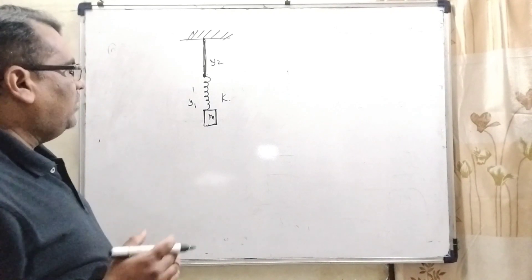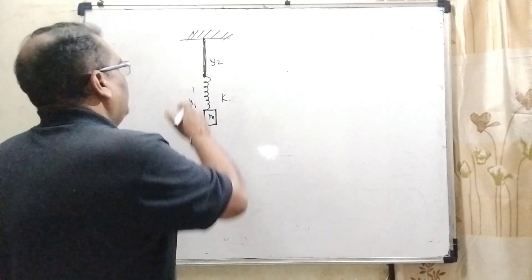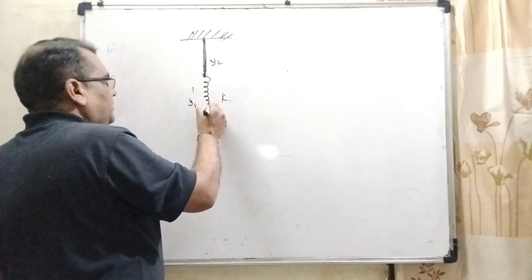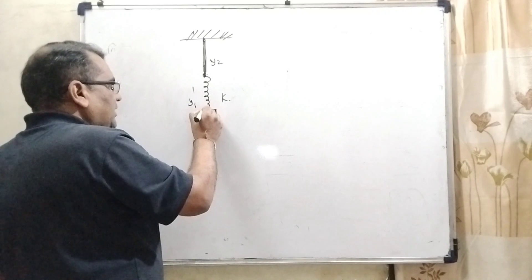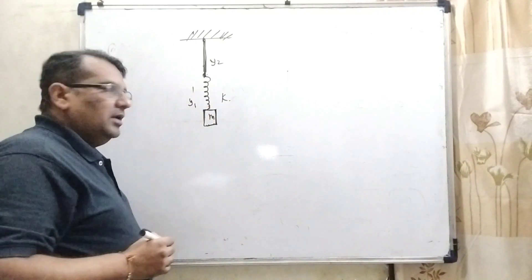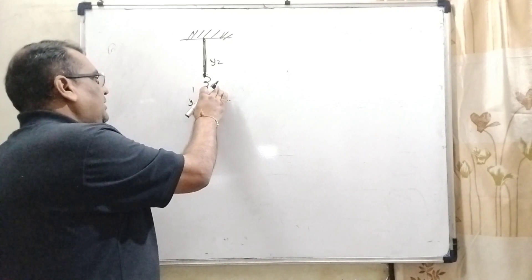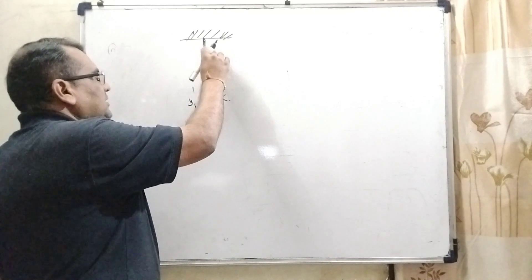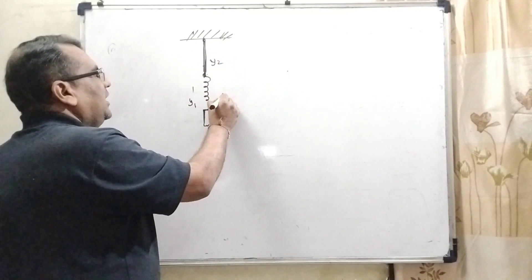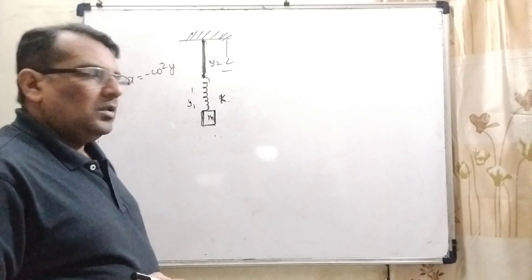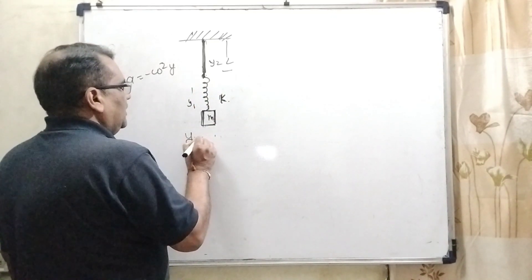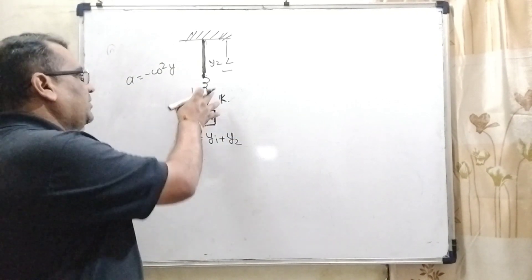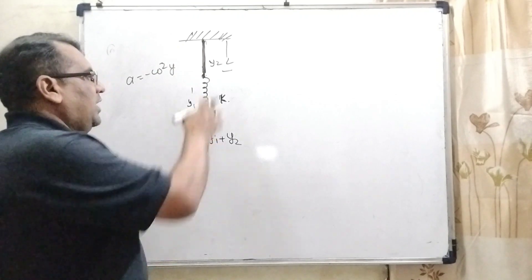Let us first understand what the question says. Here we have given a wire which is connected to the ceiling. The other end is connected to the spring, and the end of the spring is connected to the block of mass m. Let the elongation of this spring be considered y1, and elongation of this wire be considered y2, and spring constant is K. Now the total elongation is y1 plus y2.